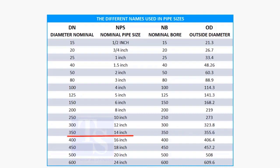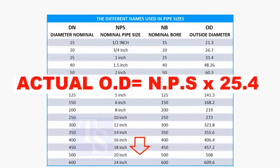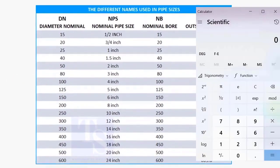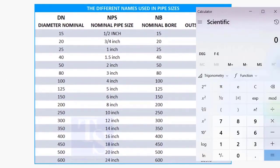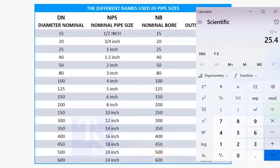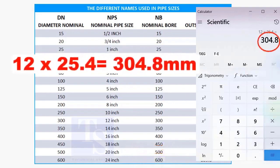For 14 inch and above, multiply the inch size by 25.4 to obtain the actual OD of the pipe. Let us check this. To calculate the OD of a 12 inch pipe, multiply 12 by 25.4.